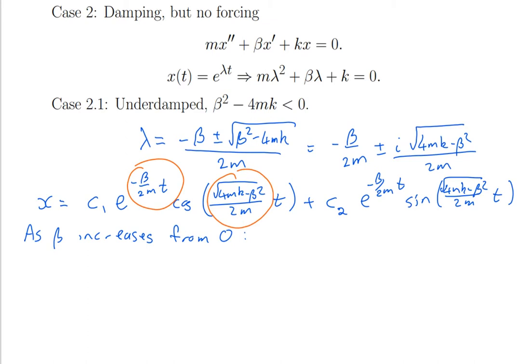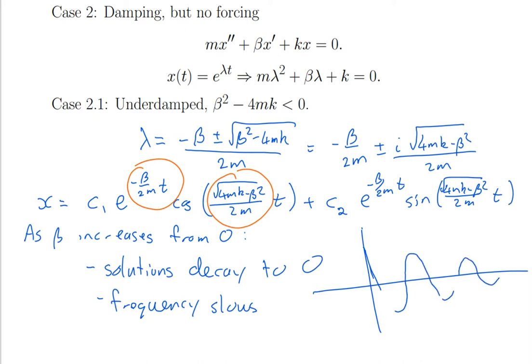The minus beta squared there makes that number smaller, which means the frequency is going to decrease. Frequency will slow, the oscillations will slow down, which makes sense if you're damping something. It's not going to oscillate quite so fast. So the two effects are solutions decay, or oscillations decay to zero, and the frequency slows. So if I sketch the solutions, instead of just oscillating, they're going to look like this. Here's the exponential decay. That was the first case of damping but no forcing. That was the underdamped case. You're still oscillating, but not damped enough to stop the oscillations.